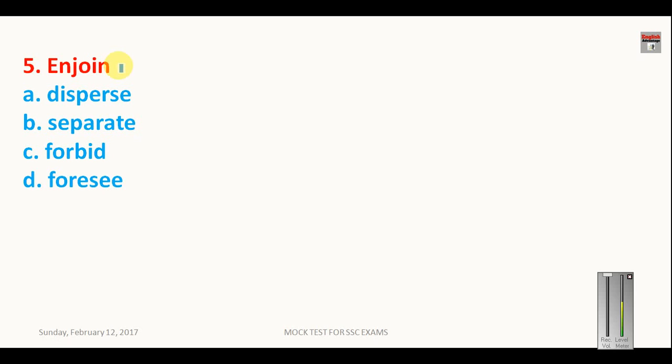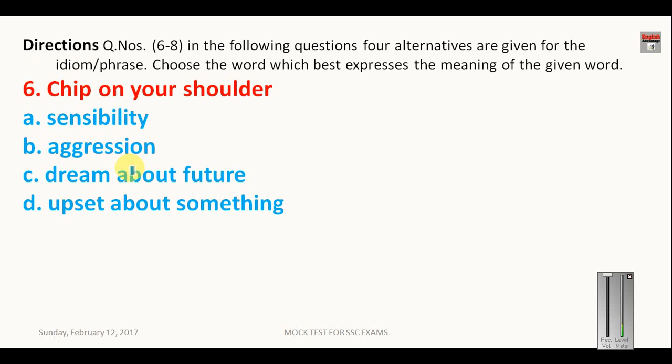Enjoining. Enjoining means to ask somebody to do something or instruct somebody to do something. And the opposite of instruction is forbid, because forbid means to prevent somebody from doing something. Foresee means to predict. Disperse means to scatter.